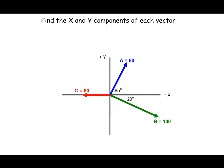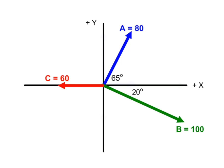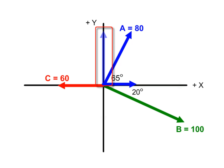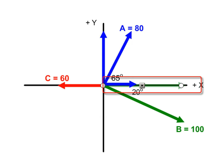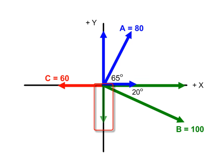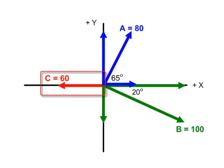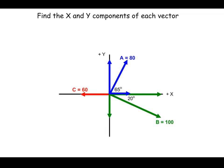To find the resultant algebraically, we need to first find the x and y components of each vector. The x component of vector A is right here, and the y component of vector A is over here. Likewise, the x component of vector B is located here, and the y component is over here. Notice that there is no y component for vector C — vector C lies entirely on the negative x-axis, so that is the value we'll be using.